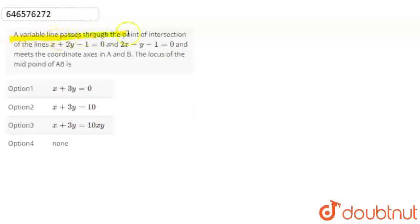A variable line passes through the point of intersection of line x plus 2y minus 1 equals 0, and 2x minus y minus 1 equals 0. It meets the coordinate axes at A and B. The locus of midpoint AB is - so first of all let